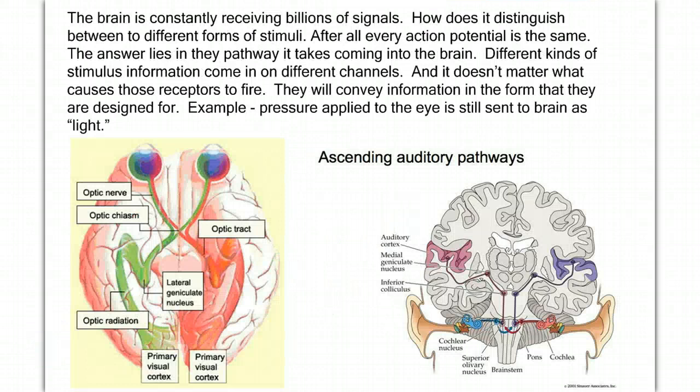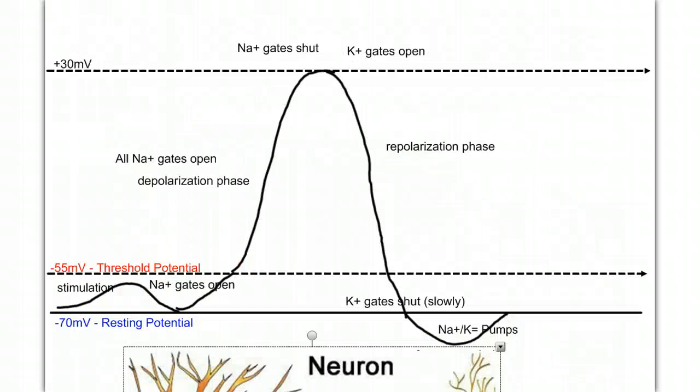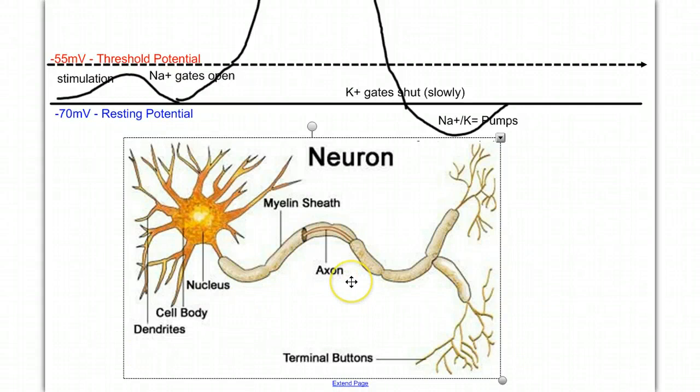Now, the brain is constantly receiving billions of signals. How does it distinguish between different forms of stimuli? In other words, how does it know which action potential means sound versus which action potentials and neural impulses mean light? All action potentials look the same. They're just neural impulses. If you could zoom in and be the size of the cell, and were standing on the side of the road above this neuron, watching action potentials go by, they would all look the same.